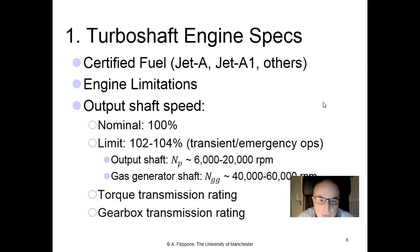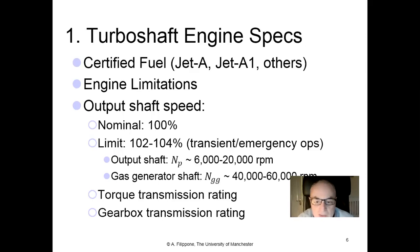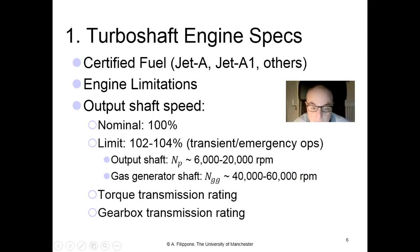Certified fuel is specified — JTA or others. Engine speed limitations are given: 100% is the design speed, but the manufacturer allows a limit just above it — perhaps 2% to 4% — for transient or emergency operations. With output shaft speeds up to 60,000 RPM, even 1% represents 600 RPM, which is not negligible. You also have the torque transmission rating and gearbox transmission rating.